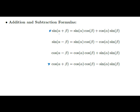So how do we memorize the sine addition formula? For the sine of alpha plus beta, two angles added together, just remember the little rhyme: sine, cosine, cosine, sine. You place the first angle in the first trig function in each term, and the second angle in the second trig function in each term. That rhyme will reproduce the formula for the sine of alpha plus beta.